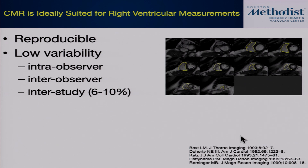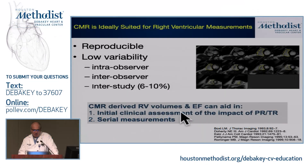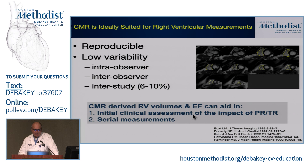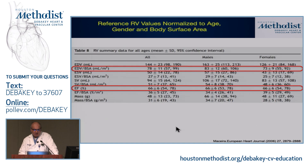You would use RV volumetric assessment to get global or regional RV function, or for serial changes — tracking RV ejection fraction or RV volumes over time, whether in the setting of right-sided valve disease or a therapeutic intervention. MRI has good reproducibility for serial measurement, making it the technique of choice when assessing serial changes.